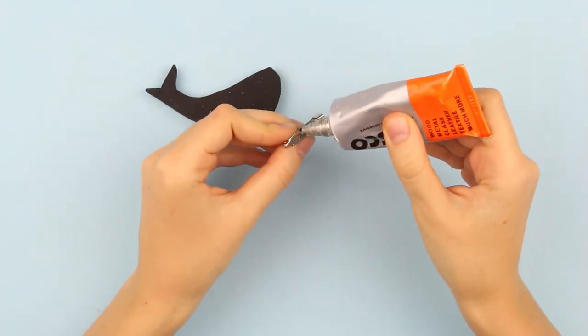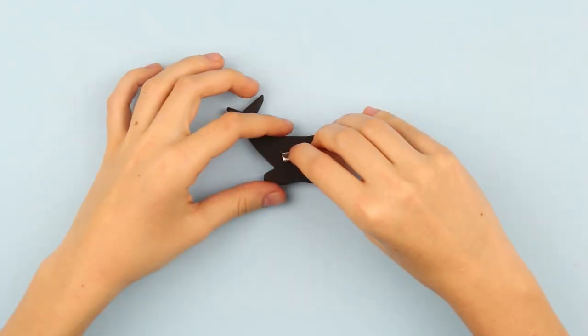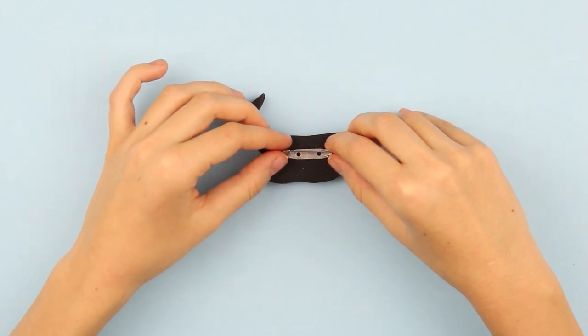Add some glue to the brooch pin. Attach to the whale back. Done!